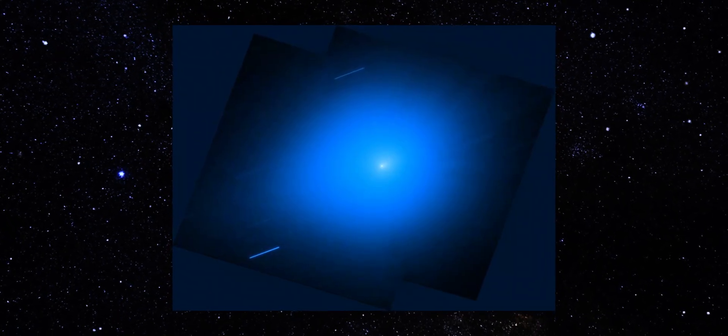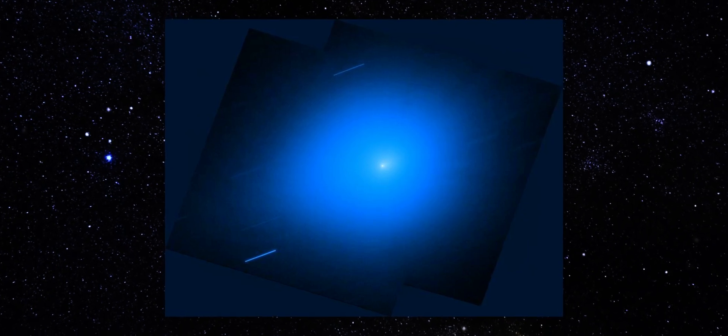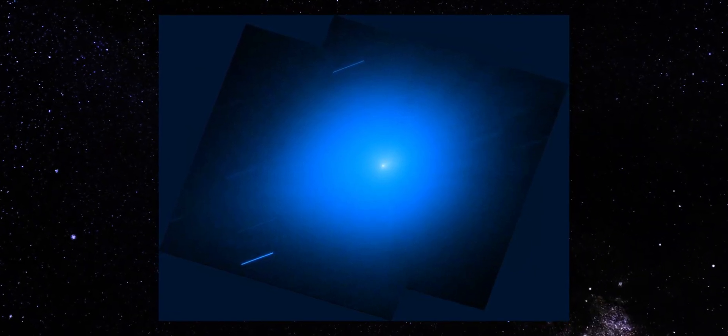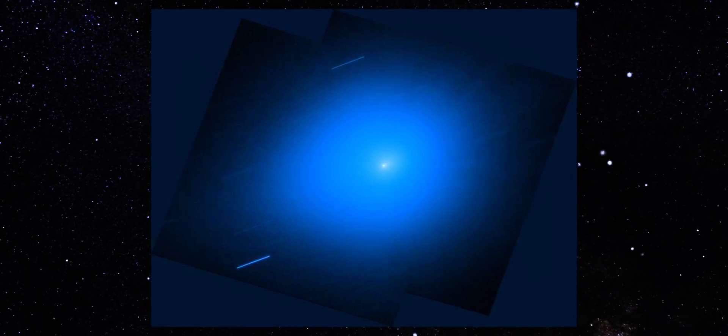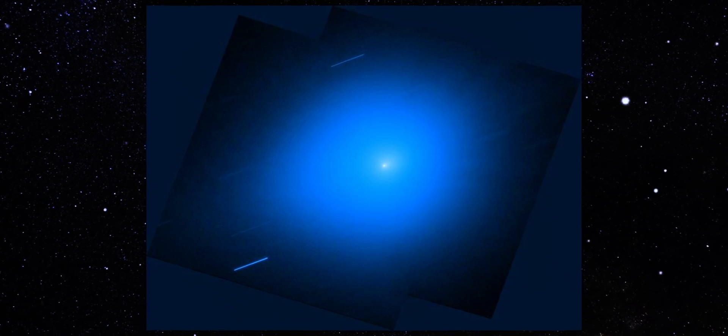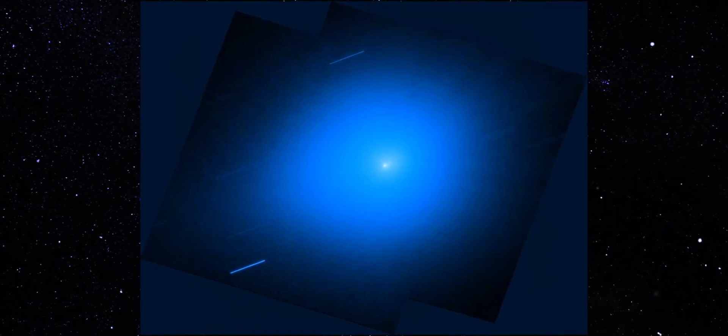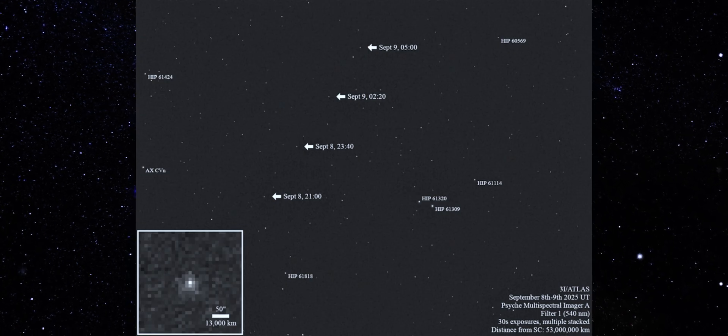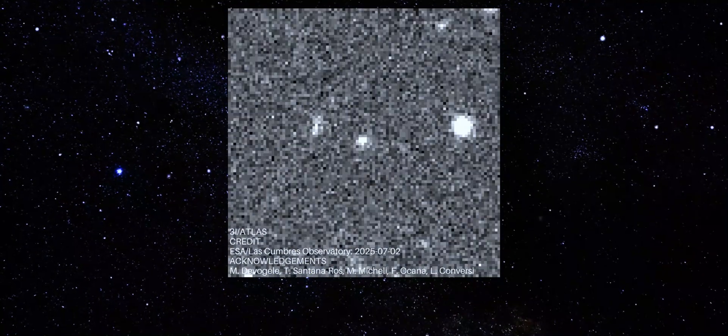The tight red center pins down the highest brightness region, while the surrounding green and blue layers show how the illumination spreads outward. What stands out most is how compact that core remains. It forms a clean, circular shape instead of stretching or warping at the edges. And once again, on the right-hand side, the glow thins and tapers in the same direction that appeared in the raw frame.